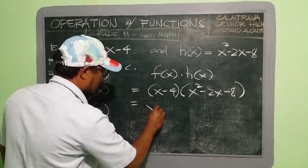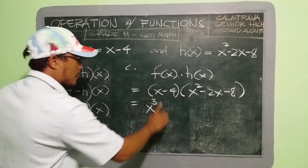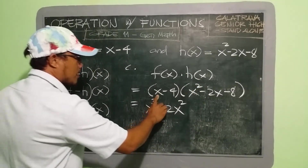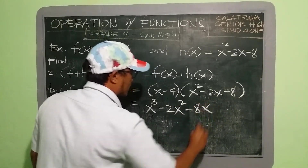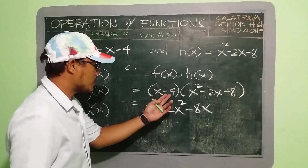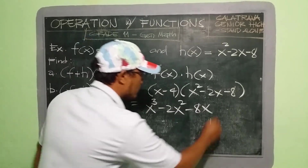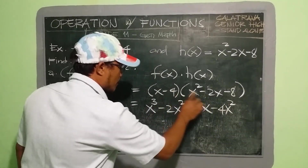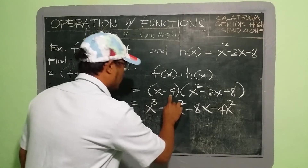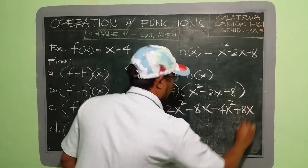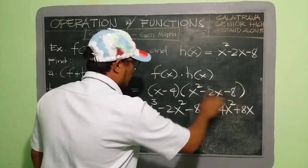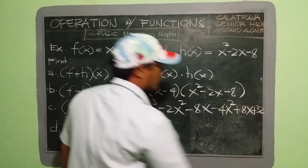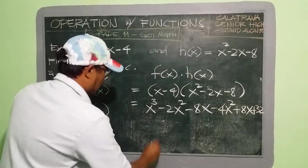So: x times x² = x³, x times −2x = −2x², x times −8 = −8x. Then: −4 times x² = −4x², −4 times −2x = positive 8x (negative times negative is positive), and −4 times −8 = positive 32. Then we simplify.